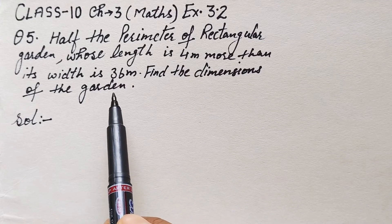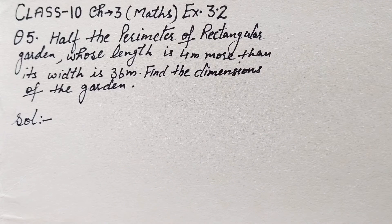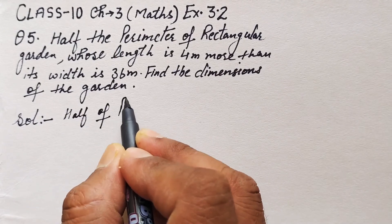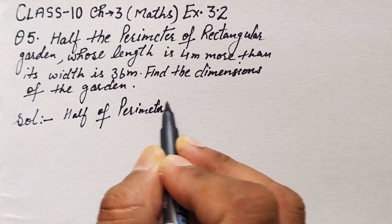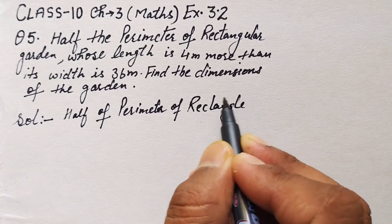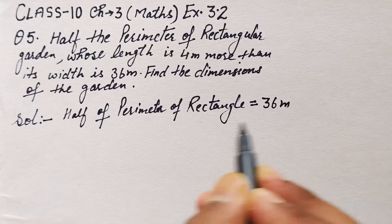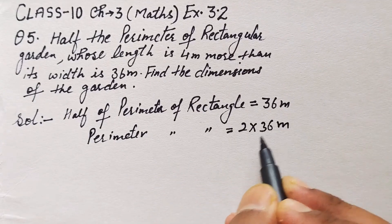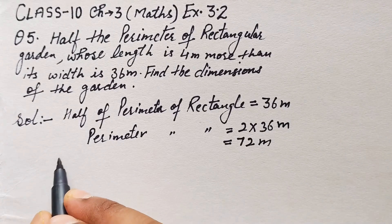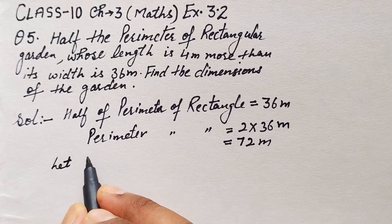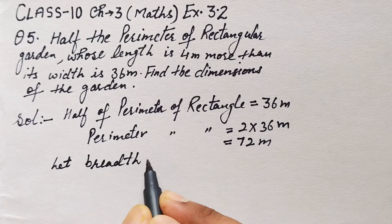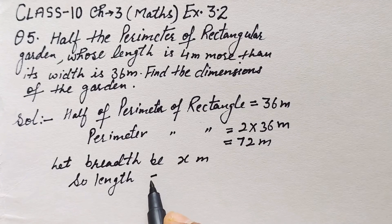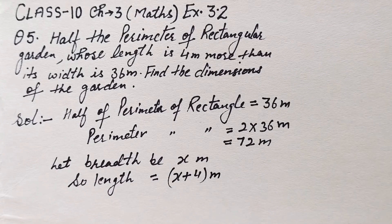Now we'll start writing. Half of the perimeter is 36, so the full perimeter is 72 meters. We let breadth be x meters, so length will be x plus 4 meters, since it is 4 more than breadth.